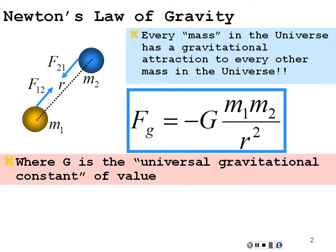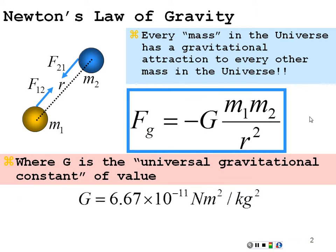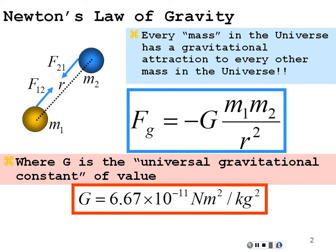The force is equal and opposite, so these two masses are attracted to one another by equal forces. G is the universal gravitational constant. It has a value of 6.67 times 10 to the minus 11 newton meter squared per kilogram squared — 6.67 times 10 to the minus 11 is the gravitational constant.